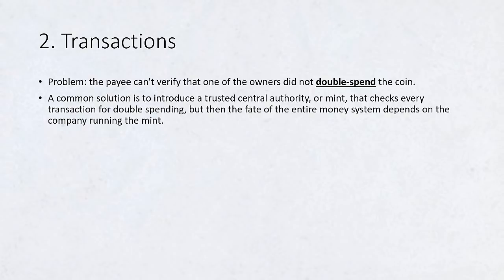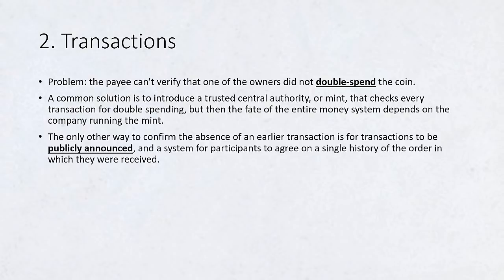We need a way for the payee to know that the previous owners did not sign any earlier transactions. For our purposes, the earliest transaction is the one that counts, so we don't care about later attempts to double spend. The only way to confirm the absence of a transaction is to be aware of all transactions. In the mint-based model, the mint was aware of all transactions and decided which arrived first.